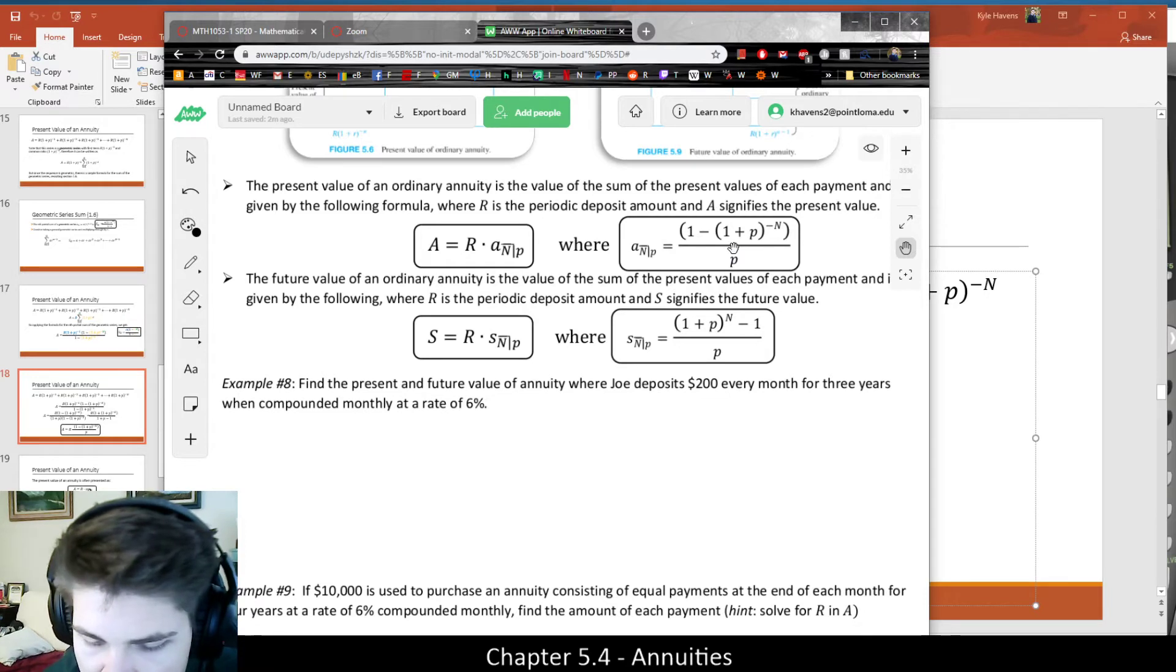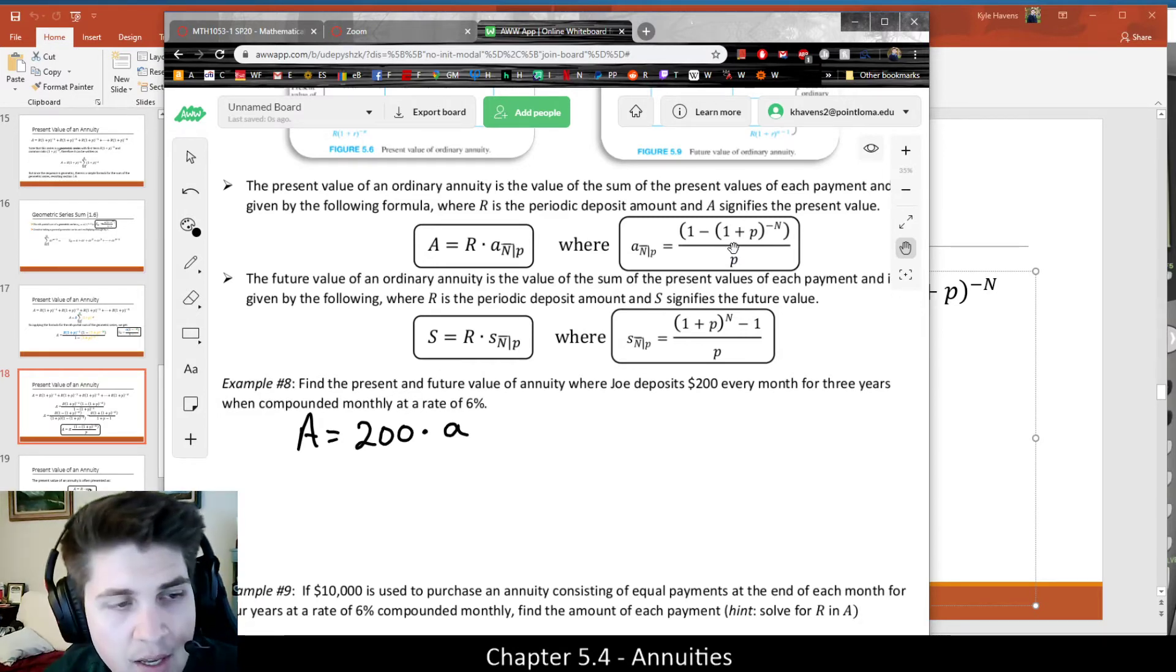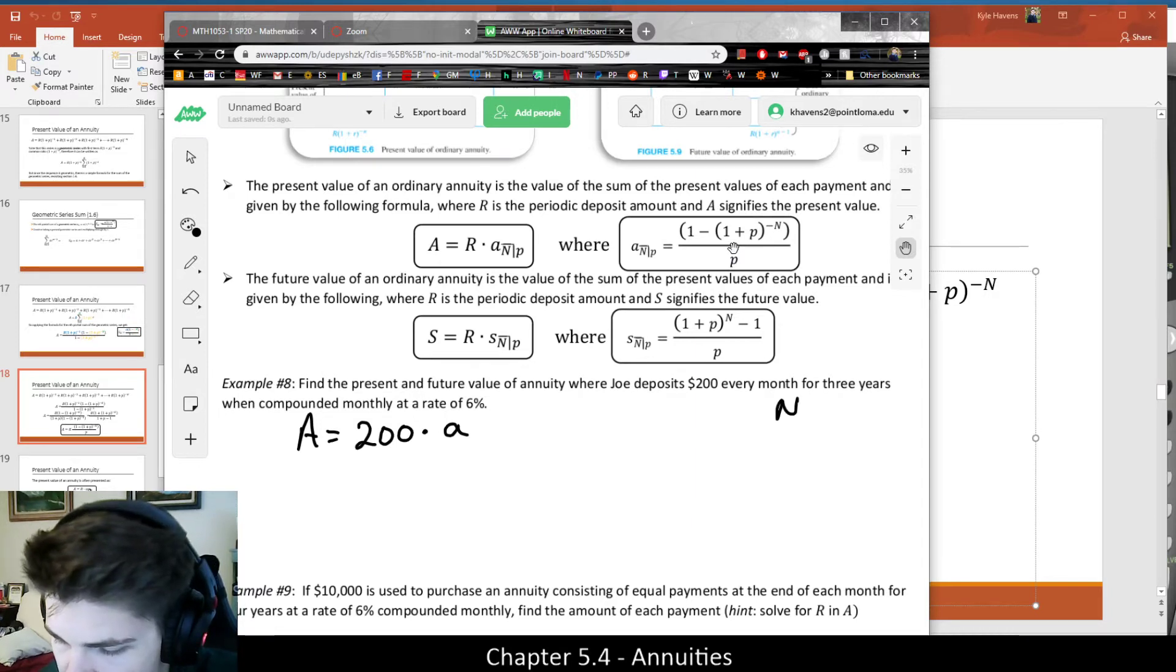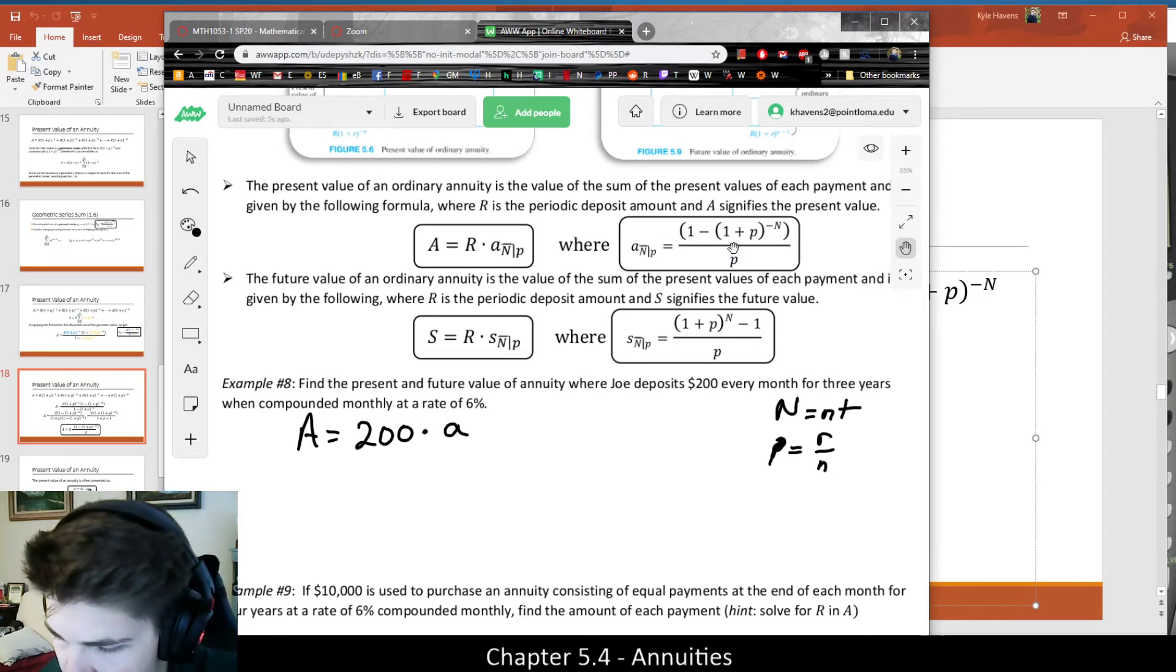But basically, let's try to use the left-hand formula, which is that A is equal to R, where R is just the payment amount, 200, times this little a to the n hat p, or n bar p, whatever. I don't even know what that's called, but it doesn't matter. So what we also obviously know is what is n and what is p. And just to recall, n is little n times t, and little p is equal to R divided by n. And it depends on the type of compounding and the time frame and the interest rate, all of those which need to be given if we are going to solve this.